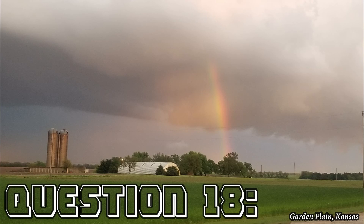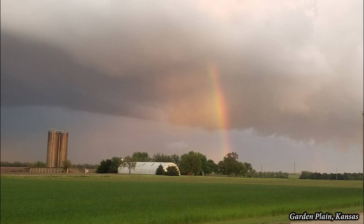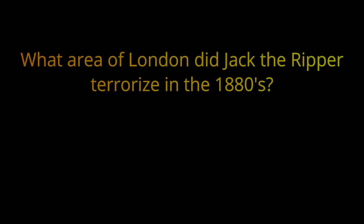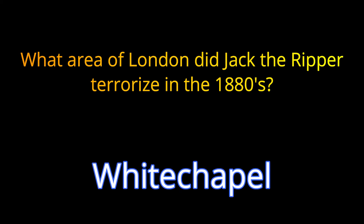Question 18. What area of London did Jack the Ripper terrorize in the 1880s? The answer is Whitechapel.